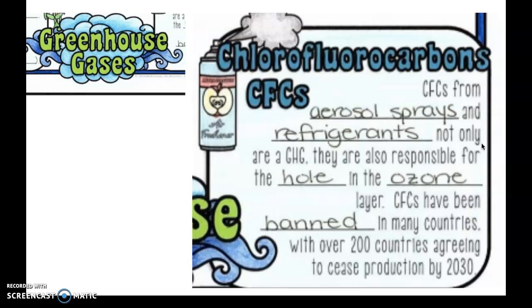Chlorofluorocarbons, CFCs, are found in aerosol sprays and refrigerants. They are not only a greenhouse gas, meaning that they reflect the radiation back to Earth, they are responsible for the hole in the ozone. CFCs eat through the ozone, the O3 molecules, by reacting with them. One molecule of CFC can destroy about 100,000 ozone molecules, so it's really dangerous. CFCs have largely been banned in many countries, with over 200 countries agreeing to cease production by 2030. For the most part, you won't find these anymore in your aerosols like spray paint or hairspray or refrigerators, but if you have a refrigerator or spray paint that was created around the 70s or 80s, it might have CFCs in it.